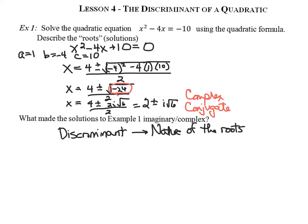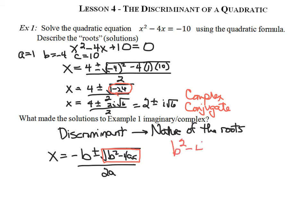What is the discriminant? Looking at the quadratic formula — x equals negative b plus or minus the square root of b squared minus 4ac all over 2a — it's the part that comes underneath the radical sign: b squared minus 4 times a times c. That quantity gives us important information about what kind of roots each quadratic equation has. In this case, because b squared minus 4ac was negative, it told us we were going to have two complex conjugate roots.